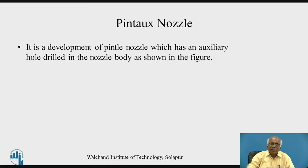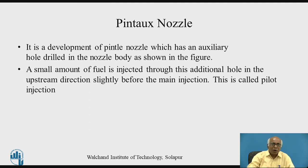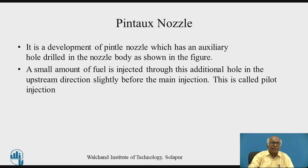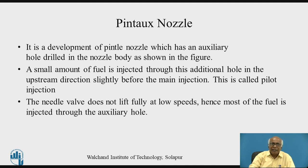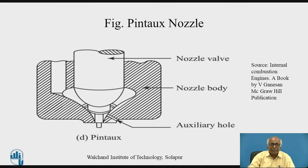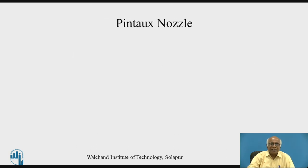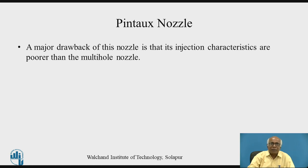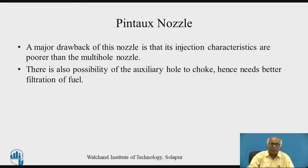The pintox nozzle is a development of the pintle nozzle, which has an auxiliary hole drilled in the nozzle body. A small amount of fuel is injected through this additional hole in the upstream direction slightly before the main injection — this is called pilot injection. The needle valve does not lift fully at low speeds, so most of the fuel is injected through the auxiliary hole. The main advantage is better cold starting performance, 20 to 25 degrees Celsius lower than multi-hole design. A major drawback is that injection characteristics are poorer than the multi-hole nozzle, and the auxiliary hole may choke, requiring better filtration.